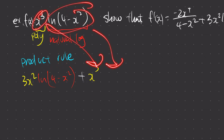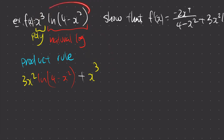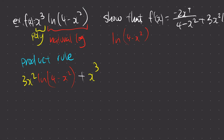If you pay attention here, in order to differentiate ln(4 minus x squared), it's actually not just a natural log type. If I rewrite it, you have to notice that we actually have something extra in here — this is a composite function, meaning we have to use chain rule.